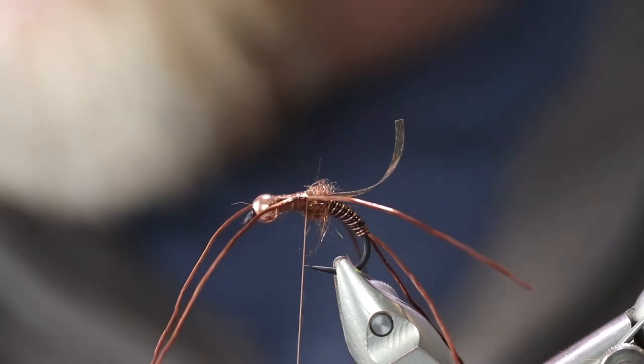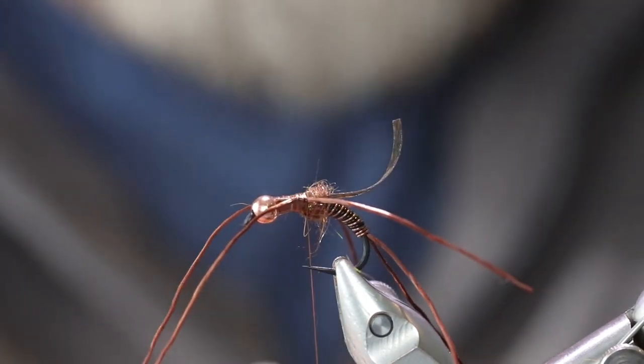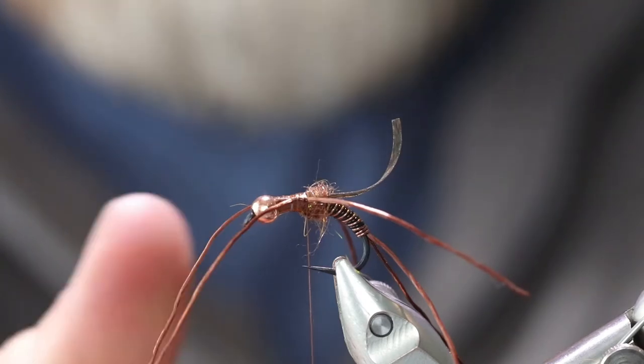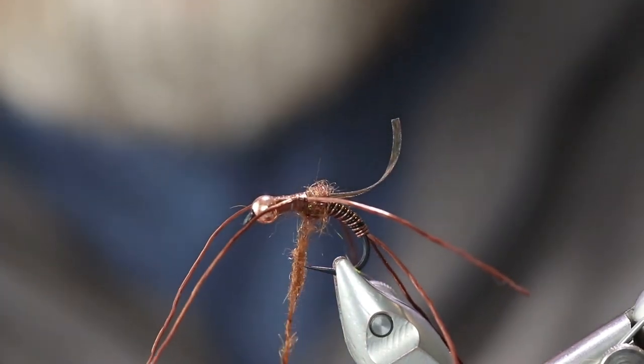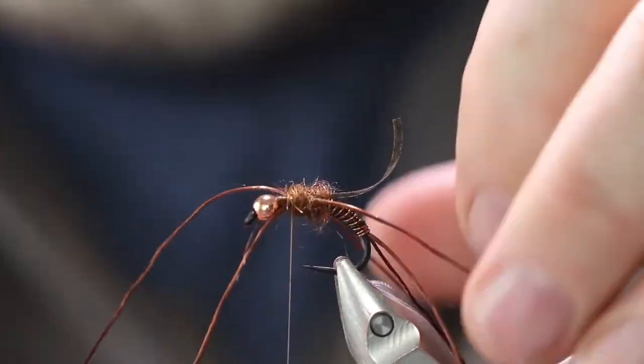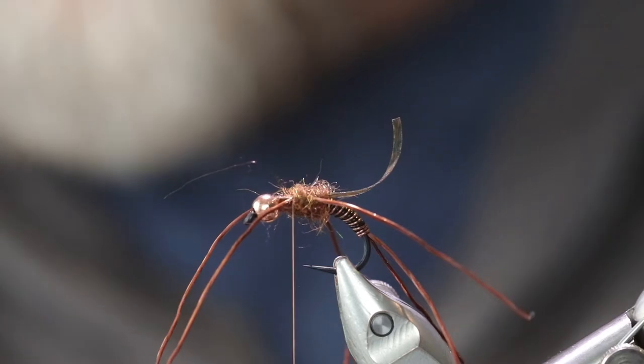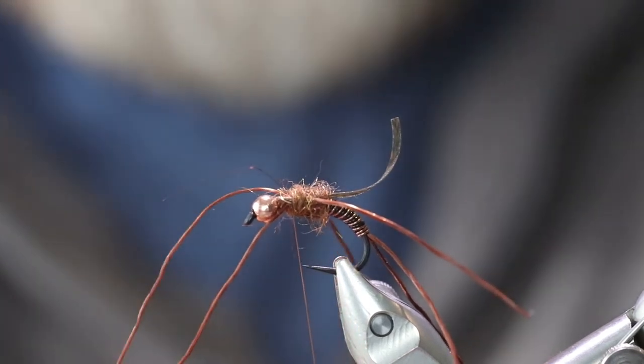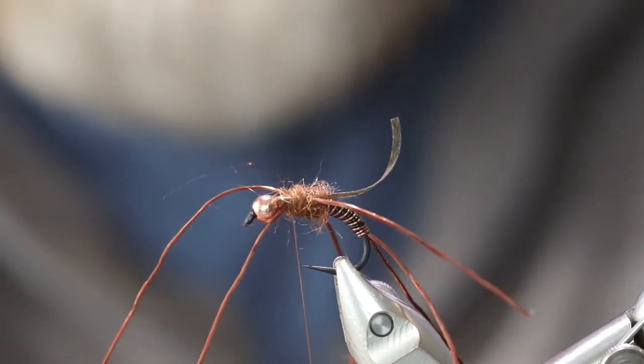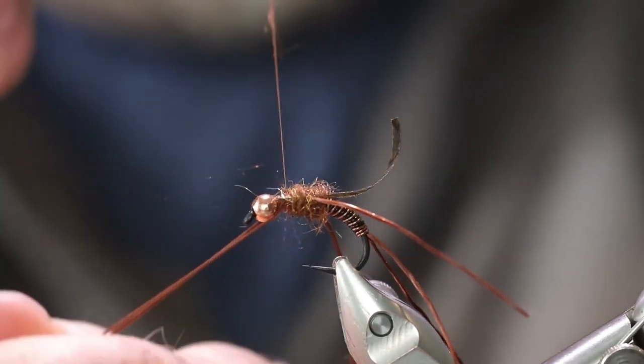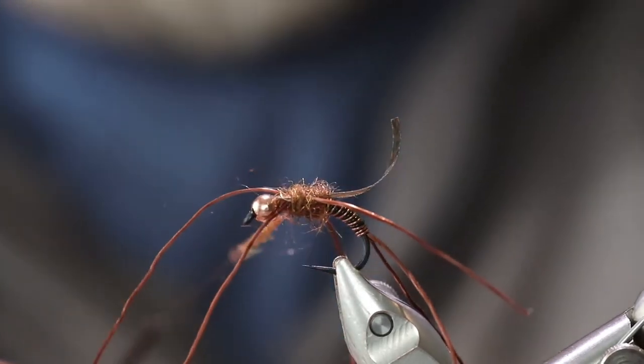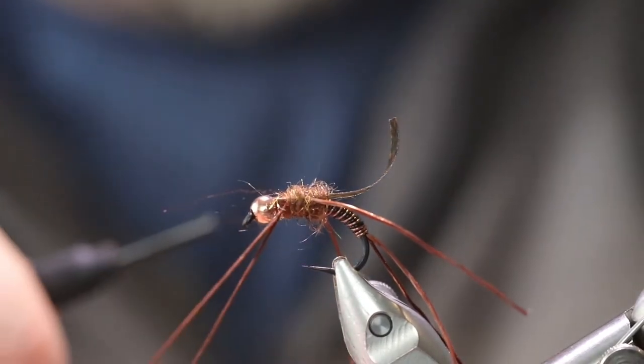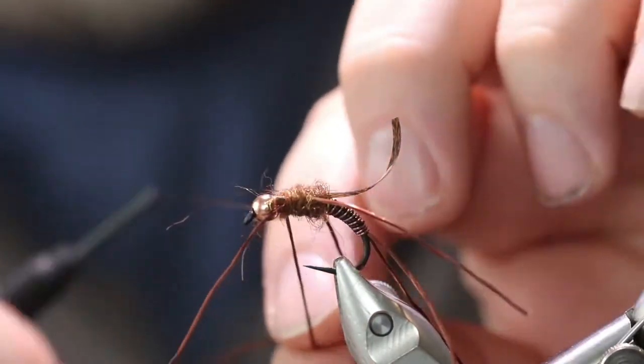Now we've got those in. Take some more dubbing. You're going to kind of back up just a little bit onto the legs. It'll help hold them back just a little. You don't want them pinned back, but you want them back just a little more. Turn up to the front legs. Now run up in front of them with the dubbing.